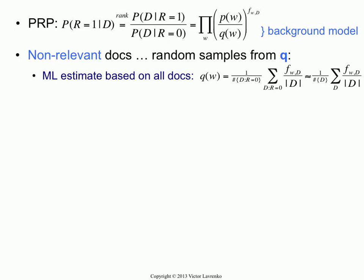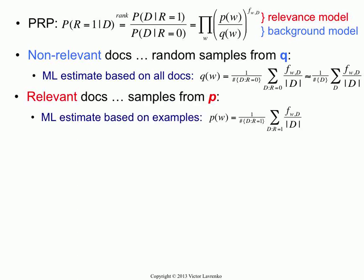We said that non-relevant documents, the non-relevant model, the background model, we're just going to model with the collection as a whole. For each word, we count the percentage of time that word occurred in the database as a whole. That's our background model.